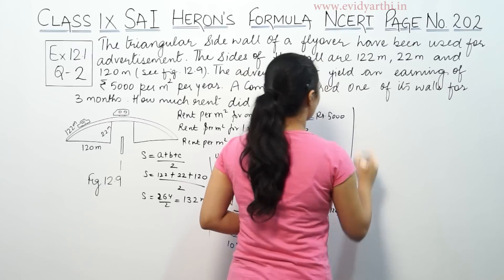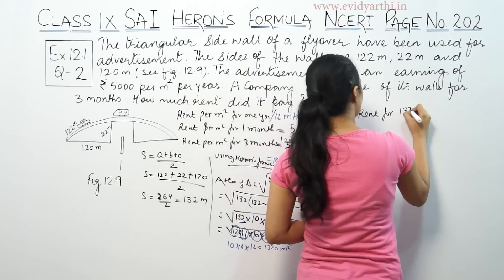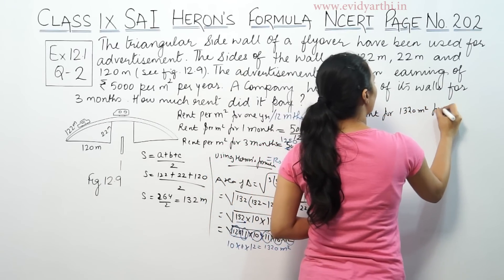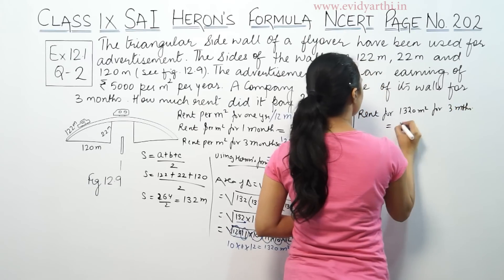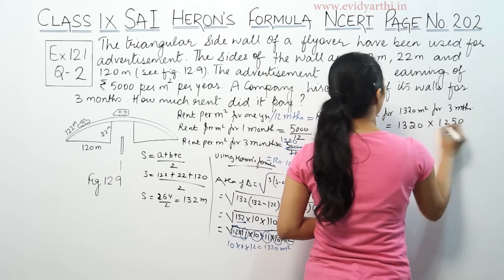3 months rent per square meter is 1250. So our answer, the rent for 1320 meters square for 3 months is equal to 1320 into 1250.